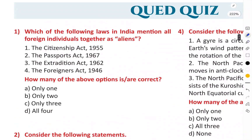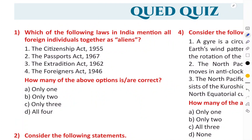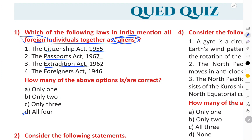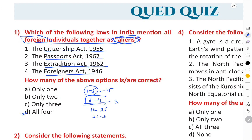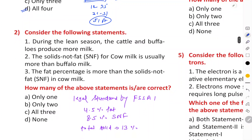The next question asks which laws in India mention foreign individuals as 'aliens.' The right answer is D — all of these laws mention someone who is foreign as an 'alien': the Citizenship Act of 1955, the Passport Act of 1967, the Extradition Act of 1962, and the Foreigners Act of 1946. Articles 6 to 11 deal with citizenship, Articles 1 to 5 deal with territories, Articles 12 to 35 deal with fundamental rights, and Articles 36 onwards cover DPSP and fundamental duties.